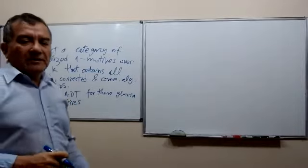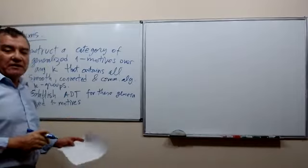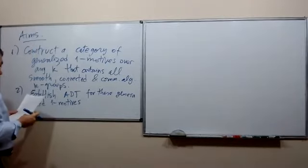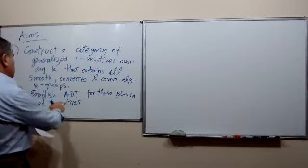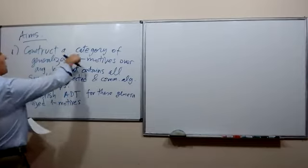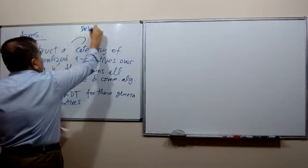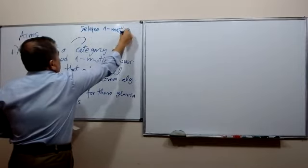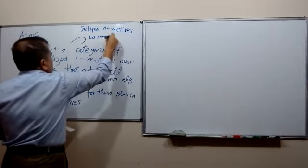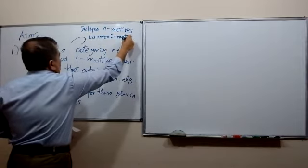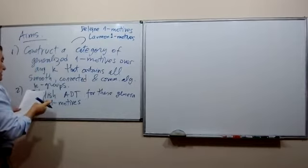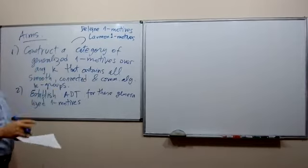The question of what 1-motives are will be addressed later. People have defined these, though not in complete generality. The category we're looking for should contain the category of Deligne 1-motives and the 1-motives with torsion. This has already been done over a perfect field.